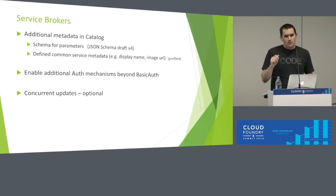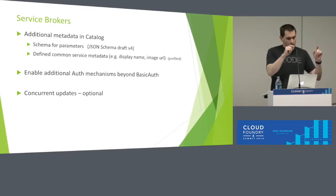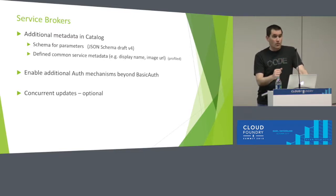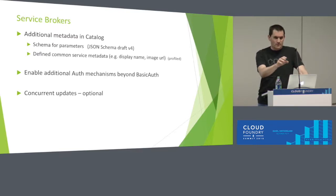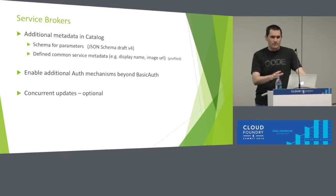The spec never said much about concurrent operations — like two instances of the same service being created at the same time, or two bindings against the same instance simultaneously. We made it so brokers can support that if they want to. The platform doesn't have to send concurrent updates — Cloud Foundry generally won't, Kubernetes may. Either way, the broker is free to allow it or not. We defined a well-known error so the platform knows it failed due to concurrency, not a back-end issue, and can retry later.